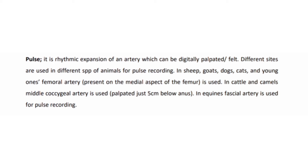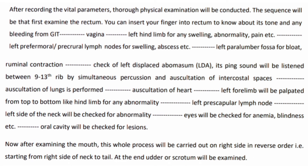Pulse is the rhythmic expansion of an artery which can be digitally palpated. Different sites are used in different species. In sheep, goats, dogs, cats and young ones, the femoral artery is used — present on the medial aspect of the femur. In cattle and camels, the middle coccygeal artery is used, palpated just 5 cm below the anus. In equines, the facial artery is used for pulse recording.